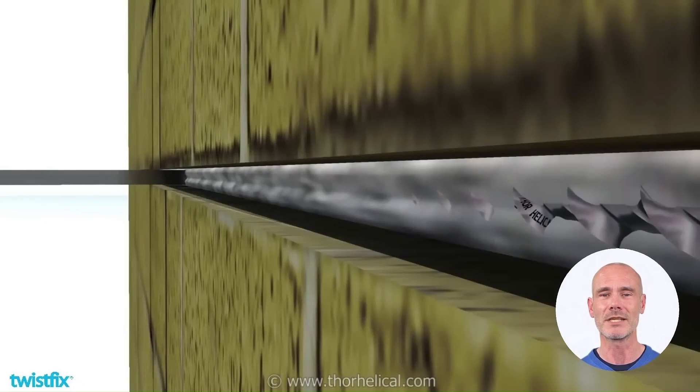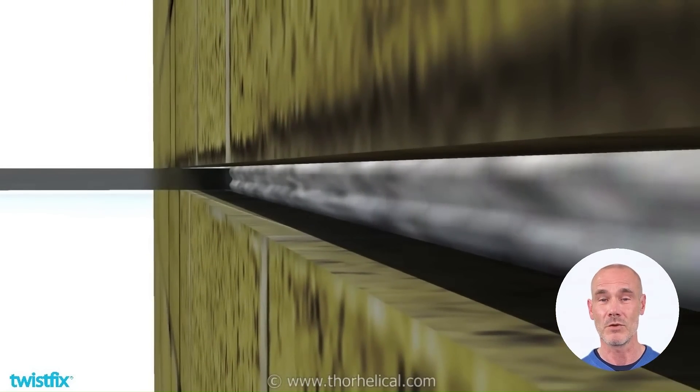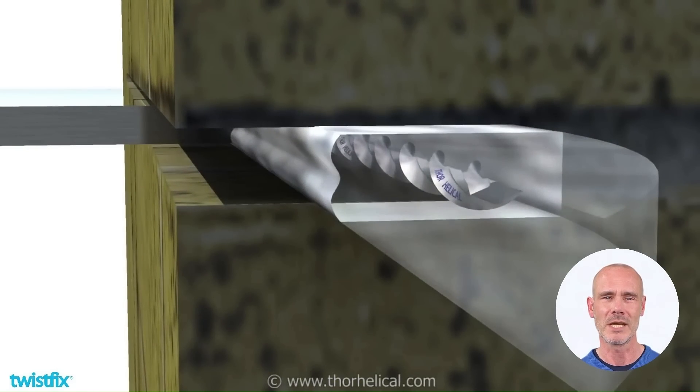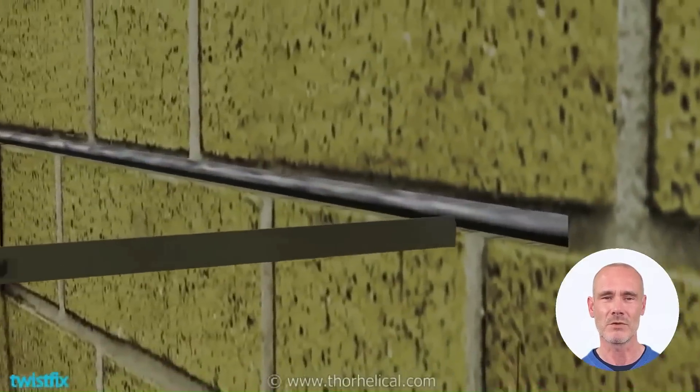A series of high-tensile, stainless steel bars, spaced no more than 450mm apart, increases the strength of masonry and distributes loads evenly over the entire reinforced area.